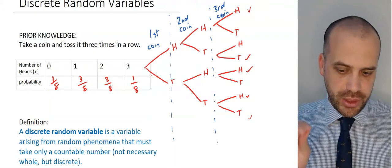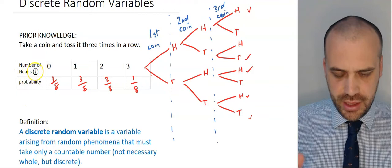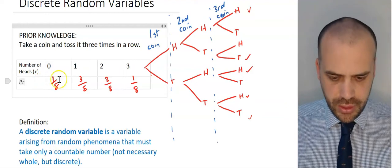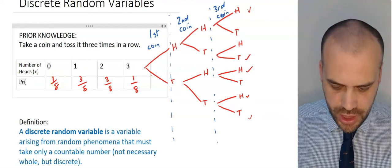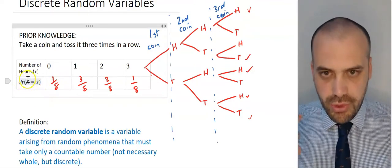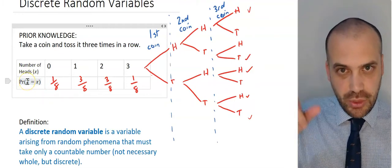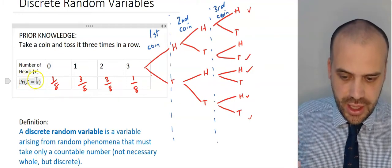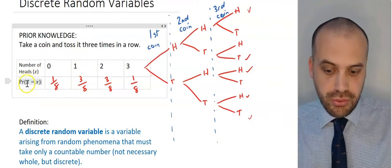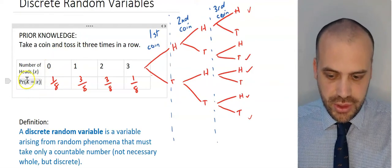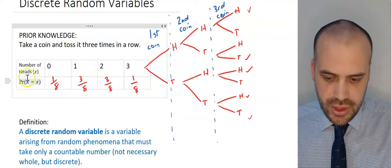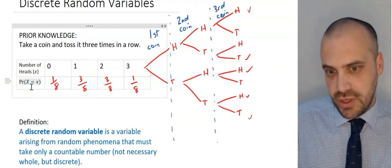Let me show you a little bit of notation. The number of heads is a lowercase x, but the probability we write differently: P, bracket, capital X equals lowercase x. The random variable is the number of heads, shown as capital X. The lowercase x represents the specific values the random variable can take — for example, the probability that the random variable number of heads equals zero, or equals one. Capital X is the random variable; lowercase x is a specific value of it.